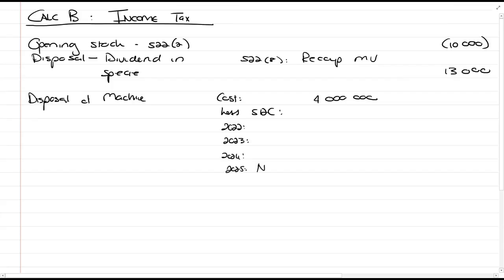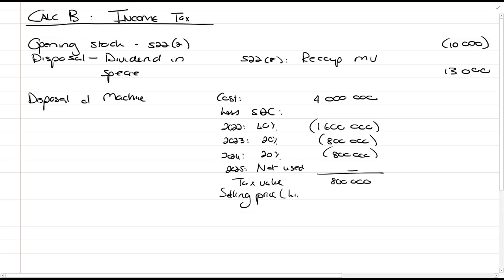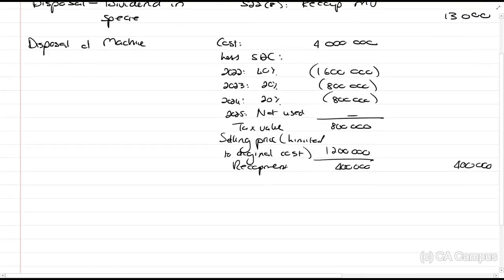We are looking at the 2025 year, and I'm just going to remind you it was not used. So, there's nothing in this year. So, in 2022, we claim 40%, 2023, 20%, 2024, also 20%. So, there's a tax value of 800,000. Selling price limited to our original cost. It was sold for 1.2 million. So, it's a 400,000 recoupment. It's taxed.